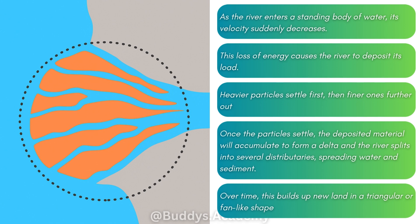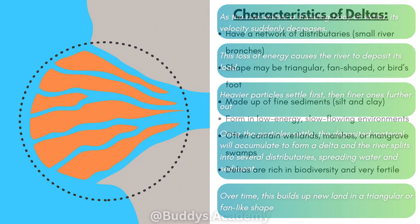This delta will only survive if the ocean currents are not strong enough to remove the sediments. Because if you have a very strong current coming through, it's going to wash all the sediments away and your delta will no longer be there.